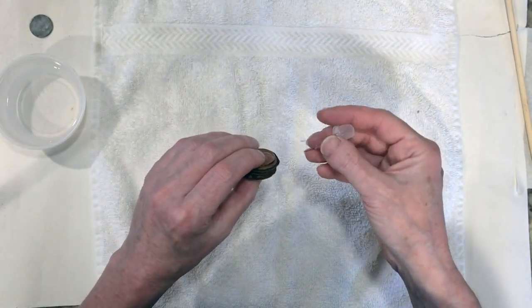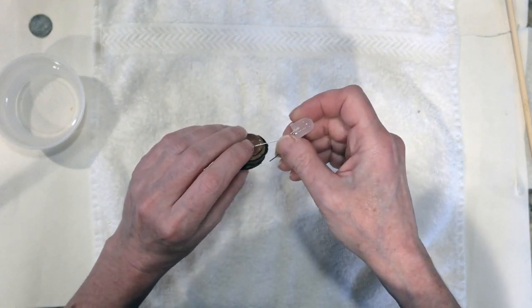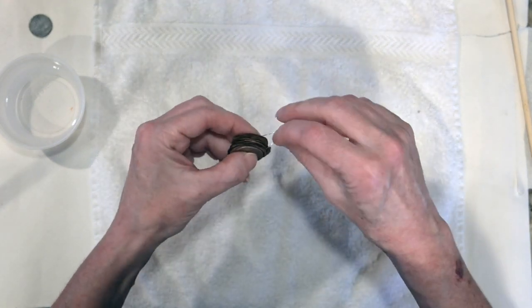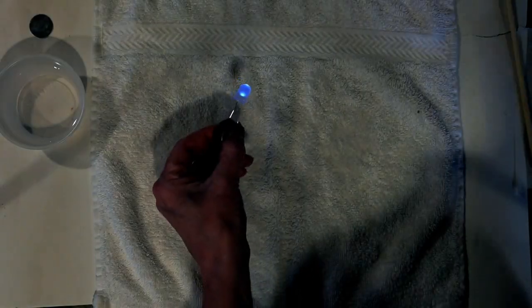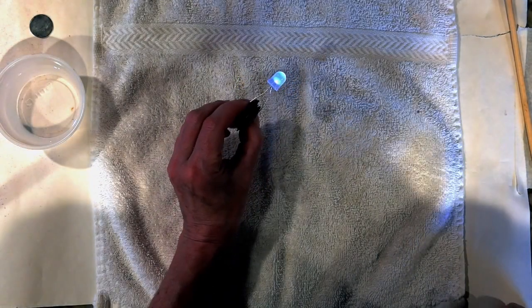Place your positive lead on the top of the battery on the penny that you didn't touch and then touch the negative lead to the other penny. And there we go.